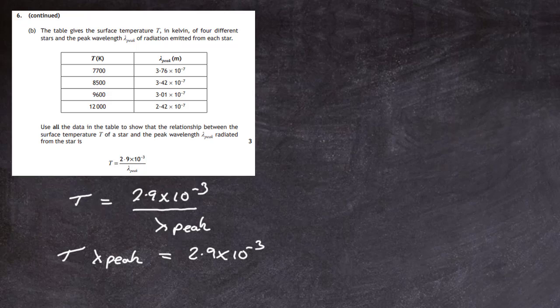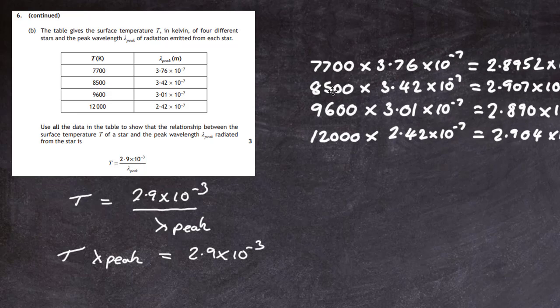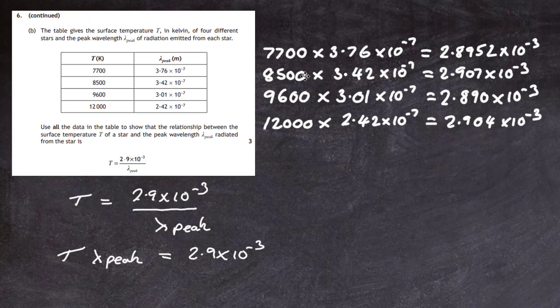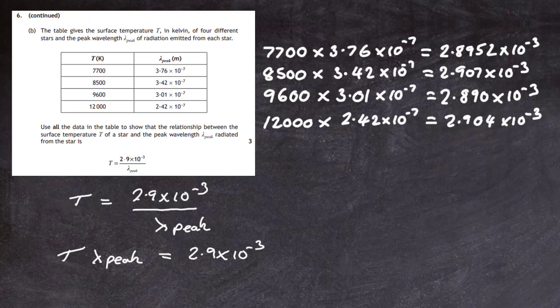What we should do then is take each line of that table in turn and multiply the temperature in kelvin by the lambda peak in meters, and we should get a figure about 2.9 times 10 to the minus 3. If every bit of the data equals that, then we can see the relationship holds. So it's a case of being very systematic and doing all the calculations very slowly and getting your answer.